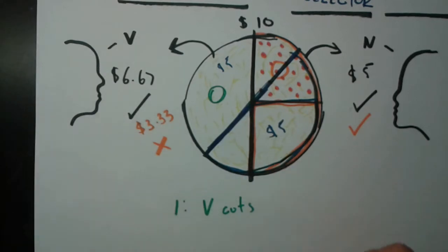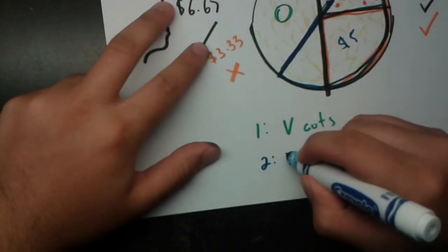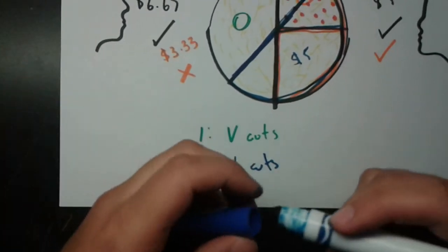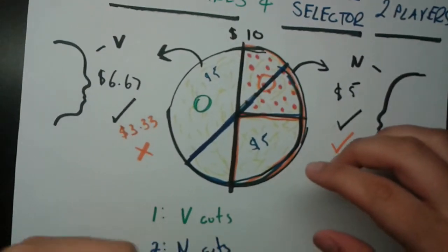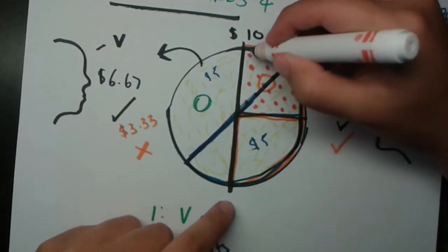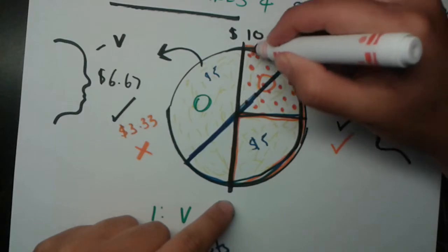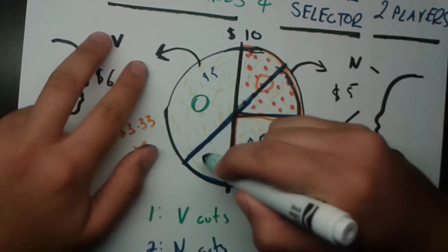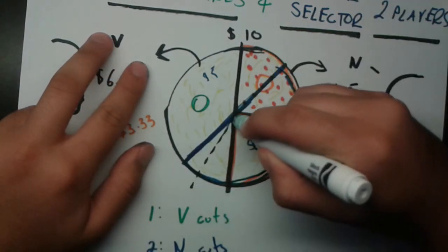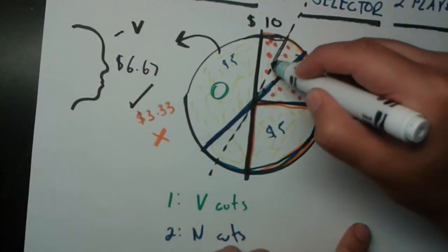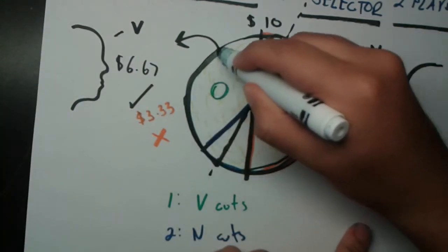Now let's say that case two is that the non-vegetarian person cuts. This is more free. Since he has no preference, he can literally just cut it in half anywhere. Let's say he cuts it in half. Let me not use red. Let me use, let's say black. I'm going to use a dotted line. Let's say he arbitrarily just cuts it in half here. We have this piece here.